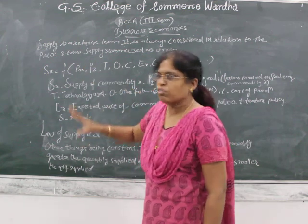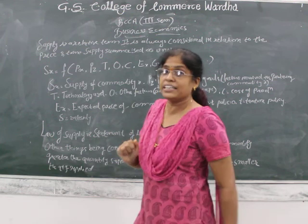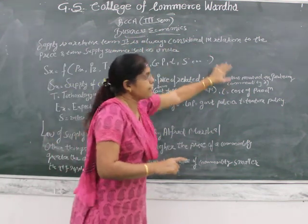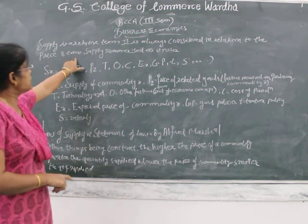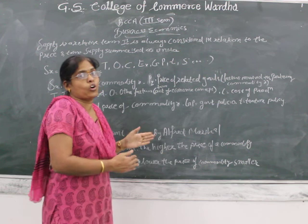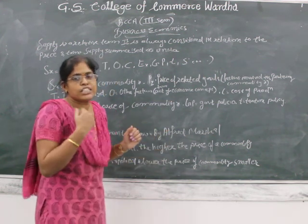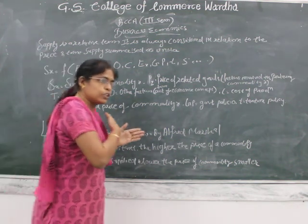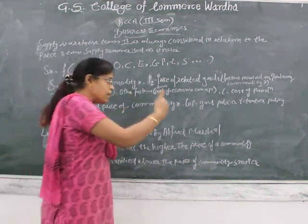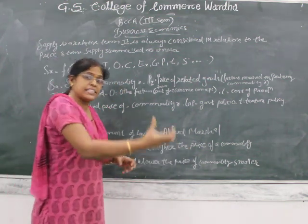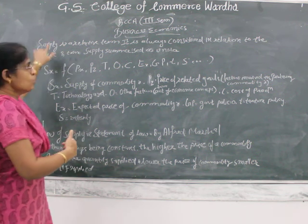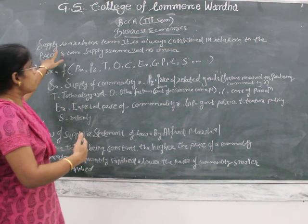Supply is a relative term. It is always considered in relation to price and time. The seller has a total stock, and considering the rate and market situation, he will not sell the total quantity at once but will make a bifurcation. For example, in the first lot he may supply 500 kg, and if rates are good he will sell 1000 kg. Time and prices are both important here.